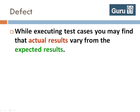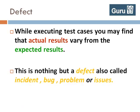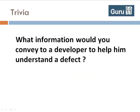While executing test cases, you may find that actual results vary from the expected results. This is nothing but a defect, also called incident, bug, problem or issues.